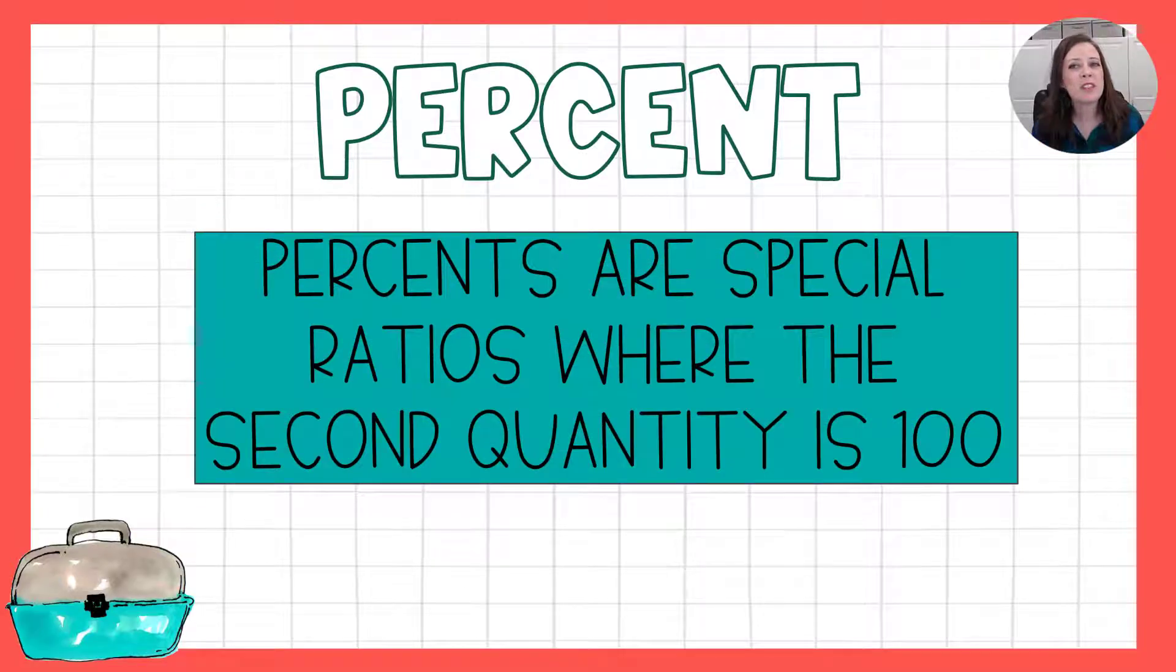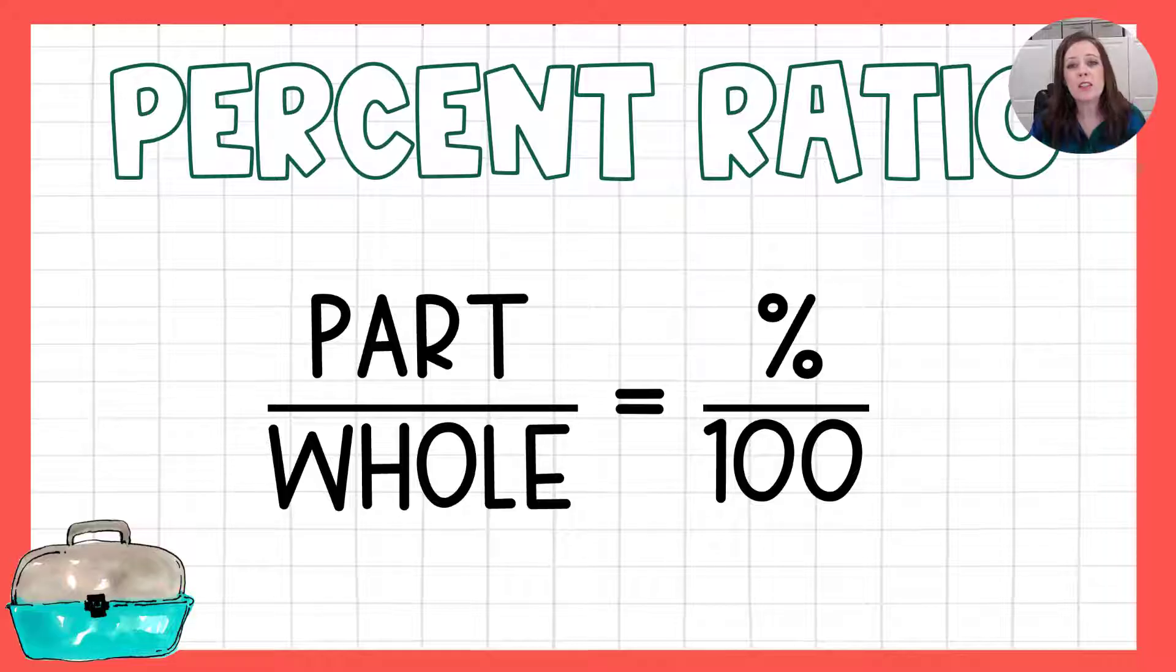Okay, percents are just a special ratio. They are a proportion but they're a special proportion because that second quantity is always 100. The second quantity always is going to be out of 100. Here is the proportion that we use: we take the part over the whole and set it equal to the percent over 100. You're always looking for either the part, the whole, or the percent. The only thing that will always always always be the same is this 100 because the word percent means out of 100.